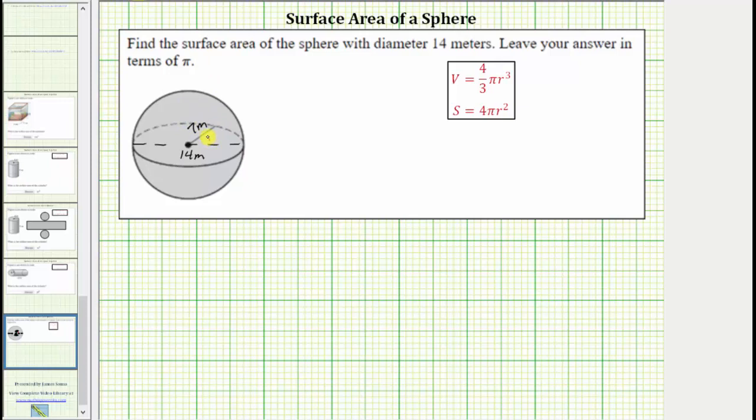So for the formula we have r equals 7 meters. Which means the surface area of the sphere is equal to 4 times pi times r squared, which is the square of 7 meters.